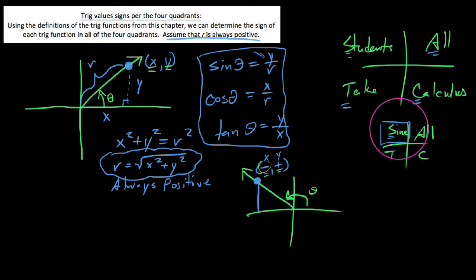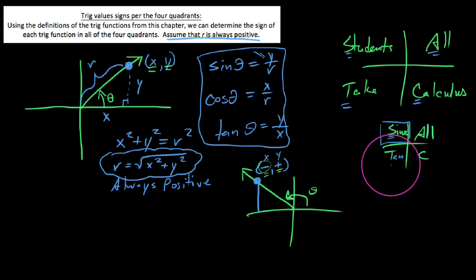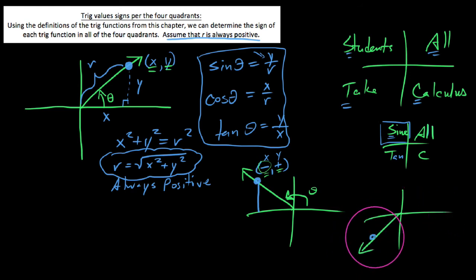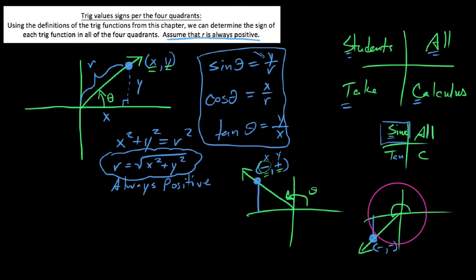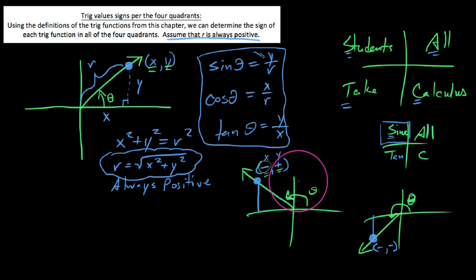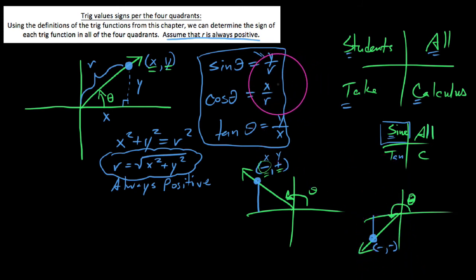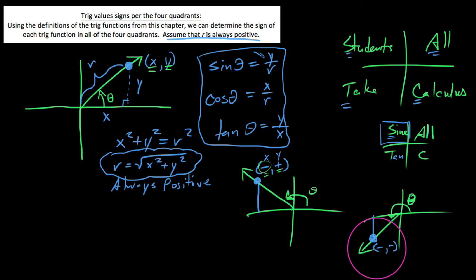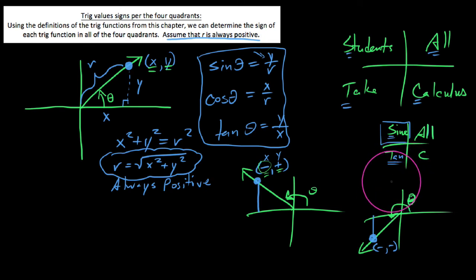This mnemonic is really nifty for determining which trig functions are positive and where. In quadrant III, 'T' means tangent is the only positive trig function. If an angle terminates in the third quadrant, the point has both a negative x and a negative y. Tangent is y over x — a negative divided by a negative — which is positive. But sine is y over r and cosine is x over r; a negative divided by a positive r gives a negative in both cases.